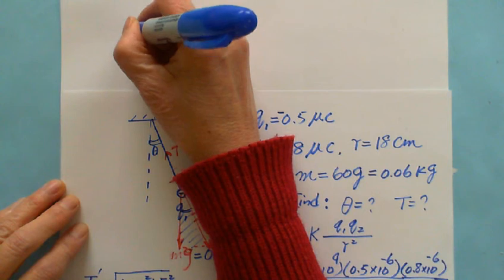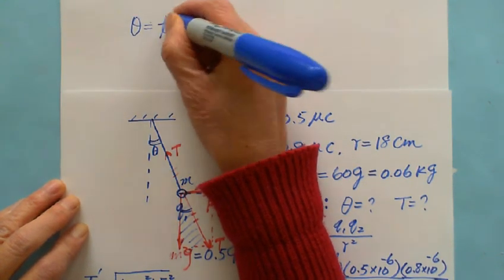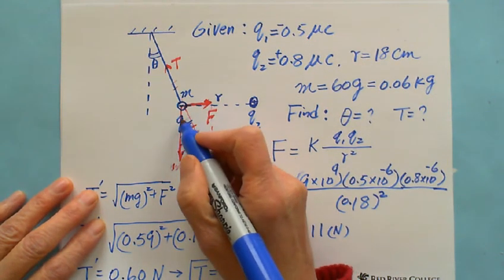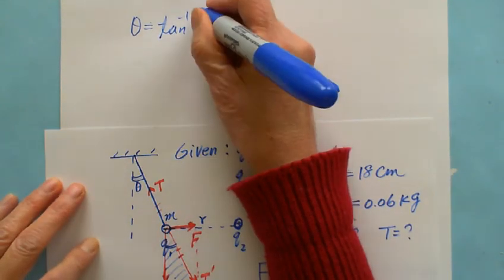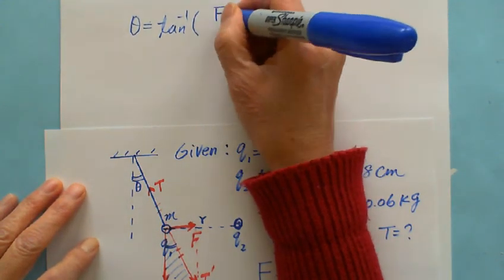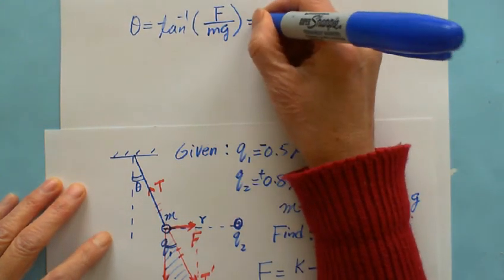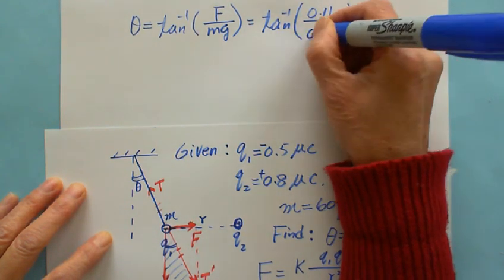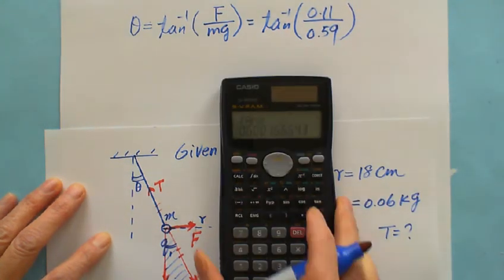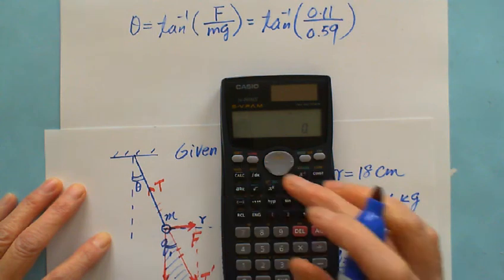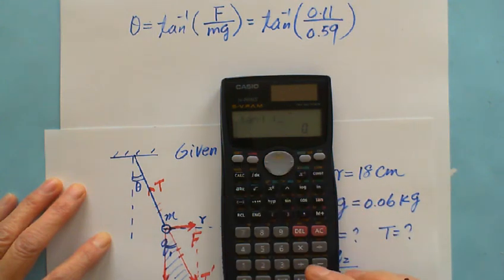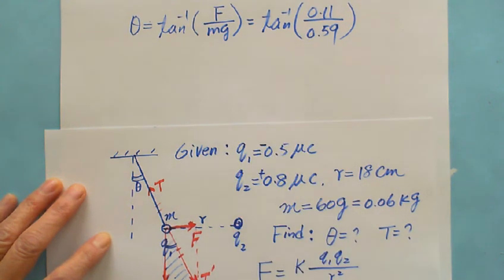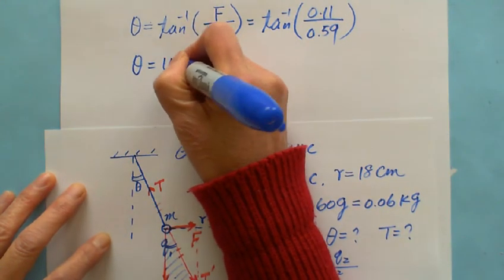Go to the other page. The angle theta equals inverse tan, because the opposite is F and adjacent is mg. So that's why it is inverse tan, opposite F over adjacent mg, which gives us tan inverse 0.11 Newton over 0.59 Newton. And we can use calculator to find inverse tan: 0.11 divided by 0.59 equals 10.6. So theta equals 10.6 degrees.